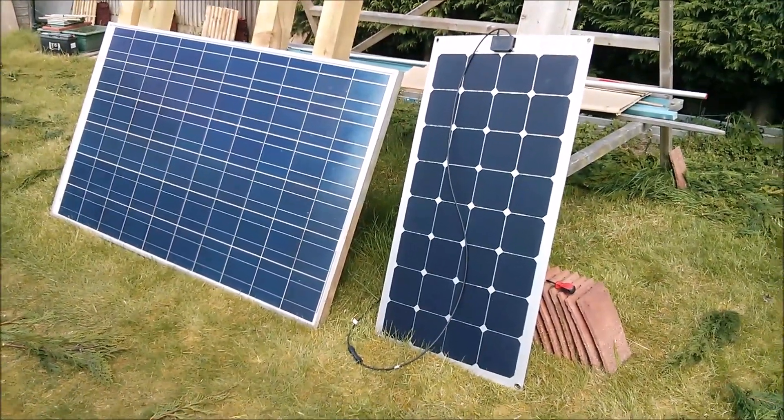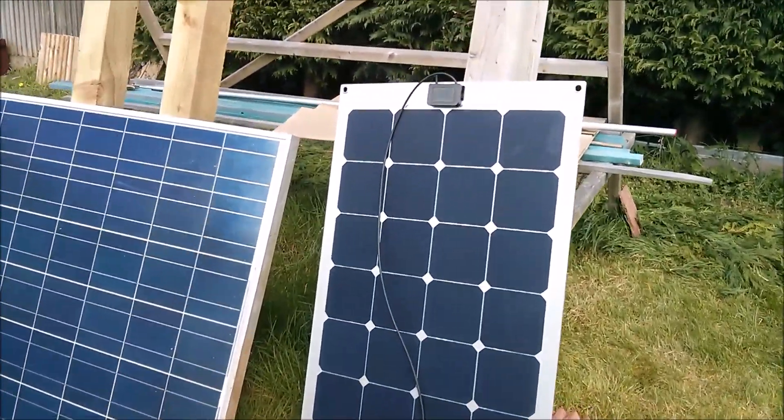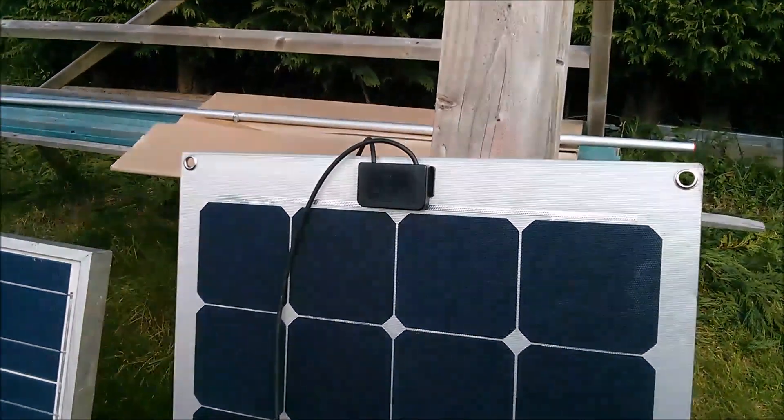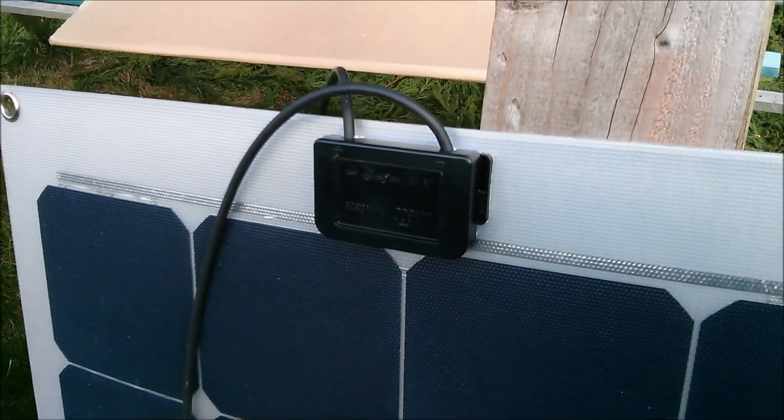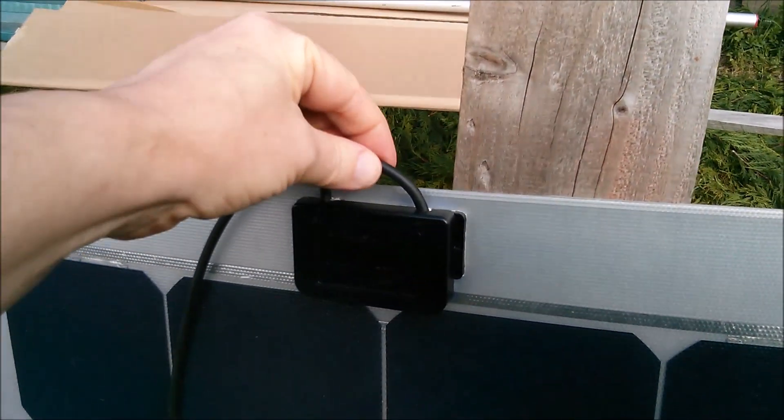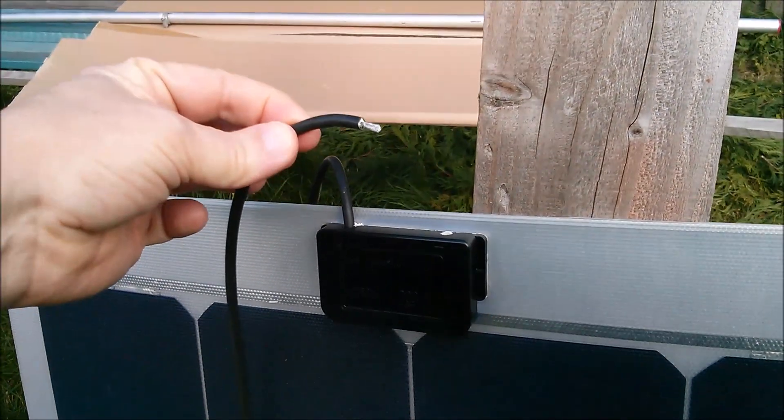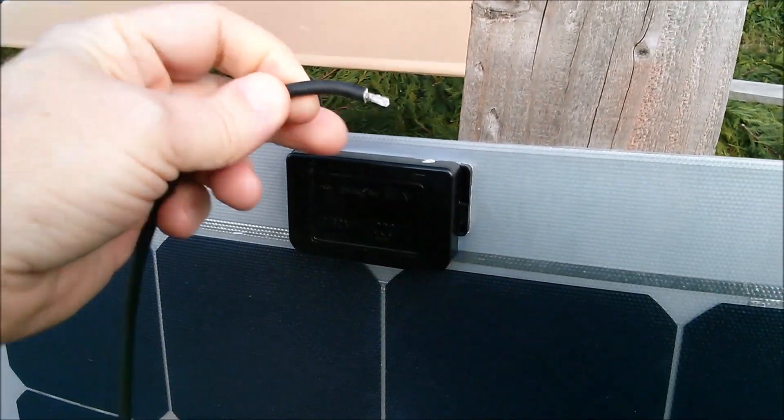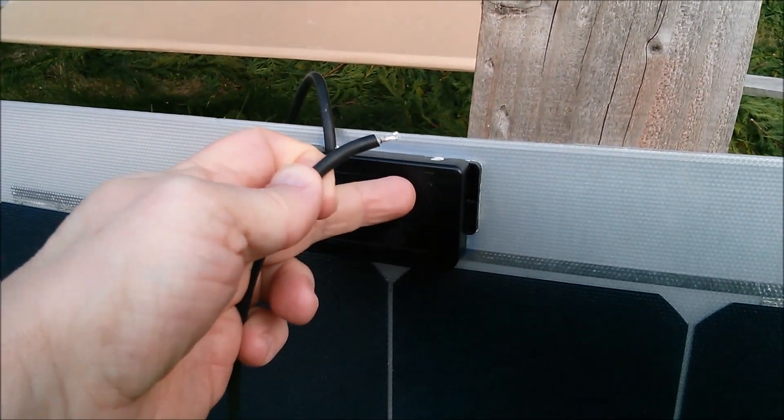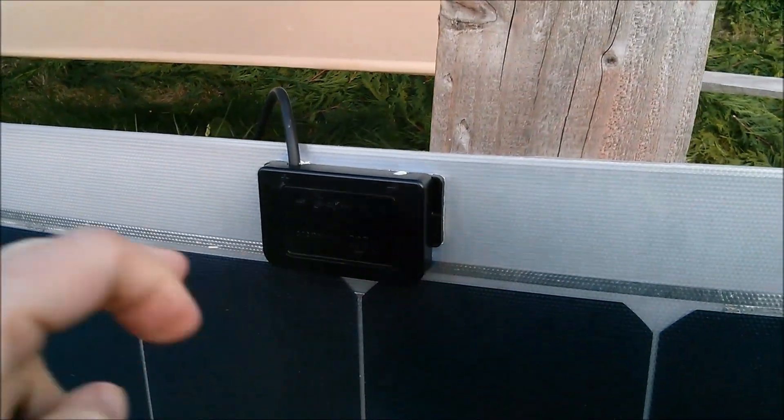I was just about to start doing some solar experiments and I picked this flexible solar panel up foolishly by the wire and it just fell out. So there's obviously, I don't think this was soldered, I think this must have been crimped in there and I've opened that up.